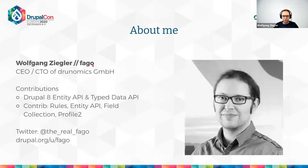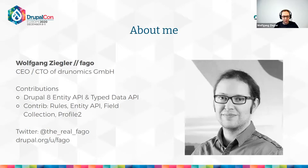Let's start with a short introduction about me. My name is Wolfkon Ziegler, or I'm Fargo on Drupal.org. I'm CEO and CTO of Tronomics, a company situated in Vienna with around 10 developers. You might know me from my contributions to the Drupal 8 entity API, the type data core system, and Drupal 7 modules like the rules module, entity API module, field collection, or profile2. You'll find me as Fargo on Twitter and Drupal.org.